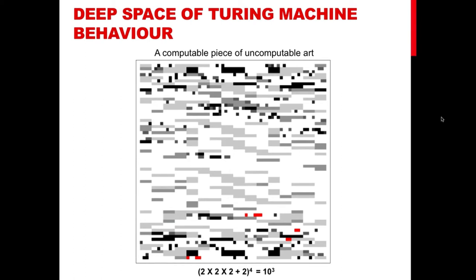This is a nice visualization I created in the direction of trying to explain the behavior of Turing machines, and it is related to my own research interests. This image shows the behavior of a typical finite set of Turing machines for a given number of states and symbols. Each dot on your screen represents a small Turing machine with two states and two symbols, of which there are 10,000 if you do the math. The darker the dot, the longer the machine takes to halt. White dots are machines that never halt, and red dots are the Busy Beavers. You can see that most Turing machines either never halt or halt very quickly, and only a few do a lot of work and halt. This gives you an idea of the typical behavior of a Turing machine for an empty tape.